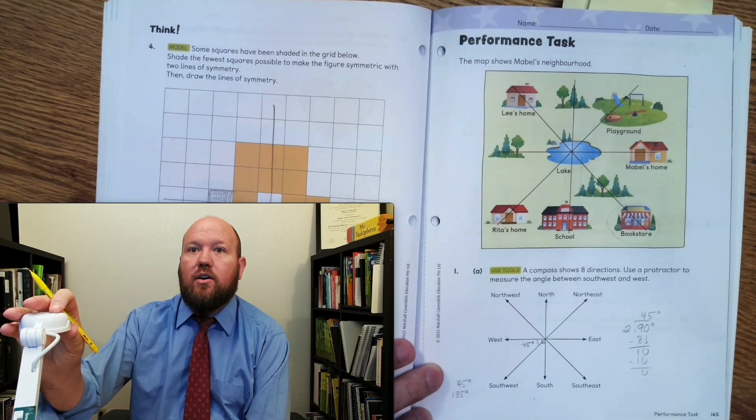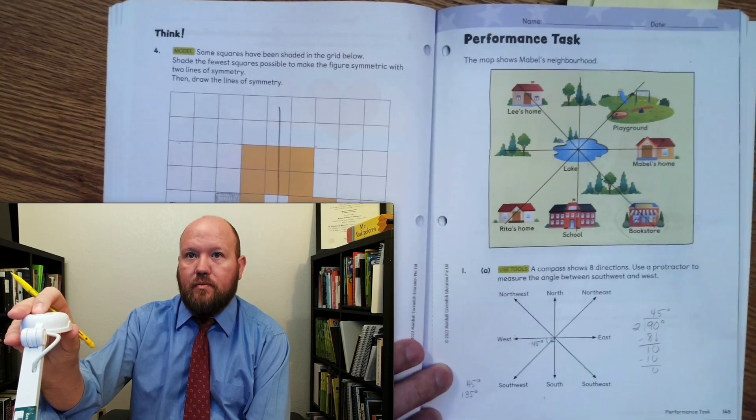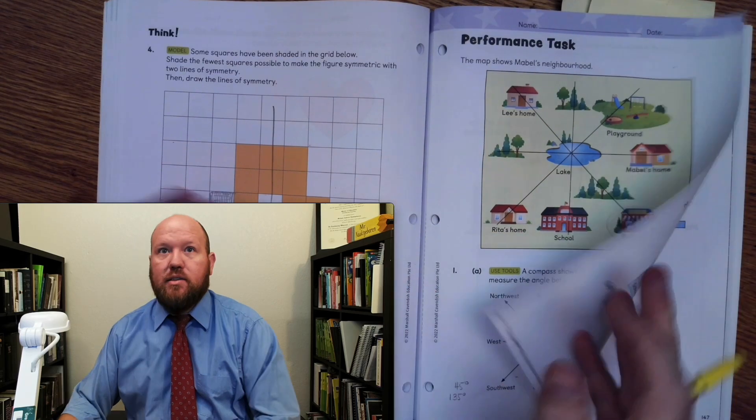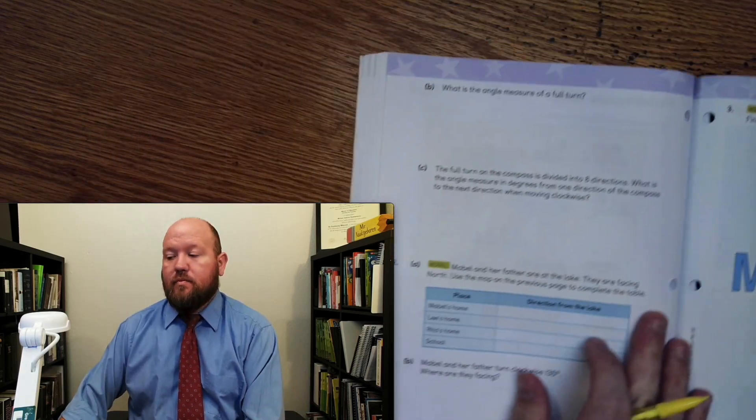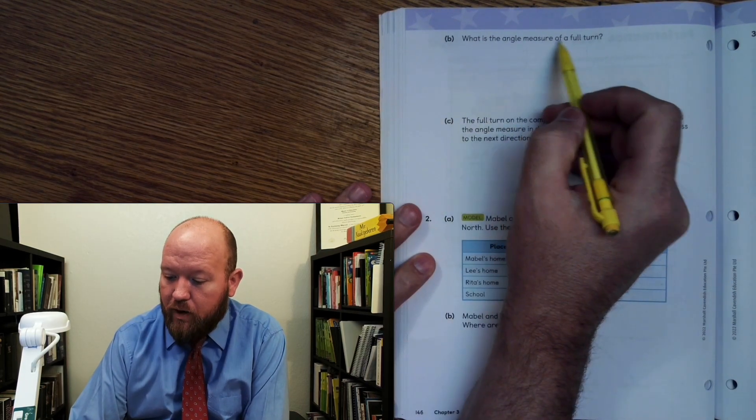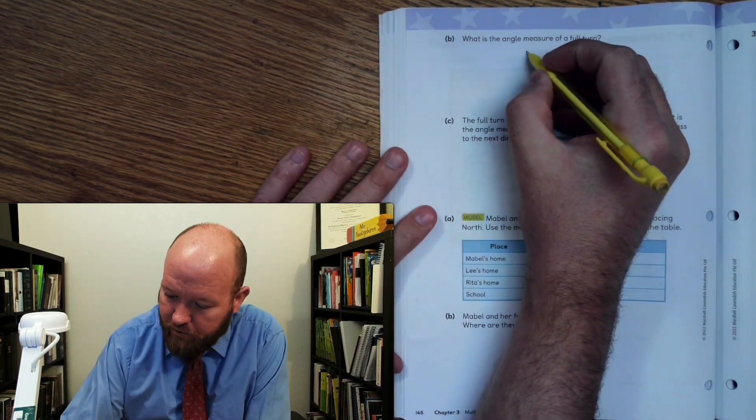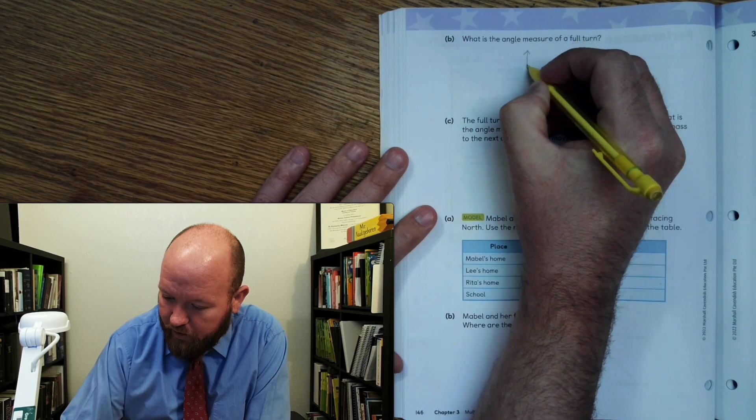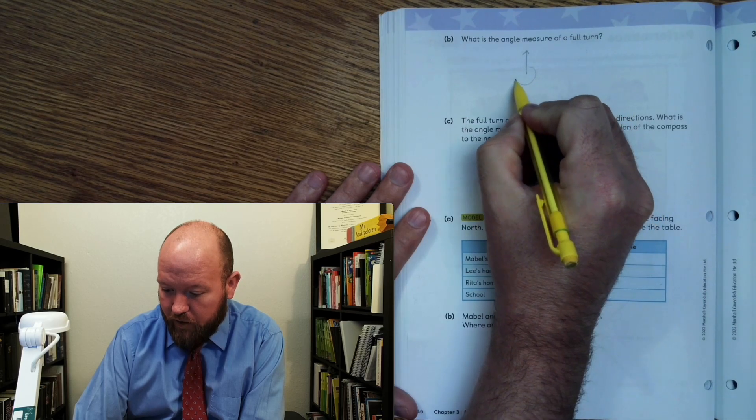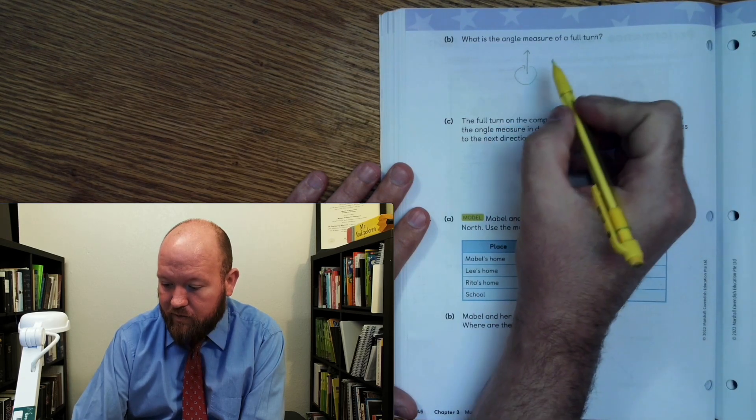All right. Now, let's turn to page 146. All right. Now, what is the angle measure of a full turn? So imagine that you're facing this way, and you're going to go all the way around. Now, you may already know the answer to this, but if not, that's okay.